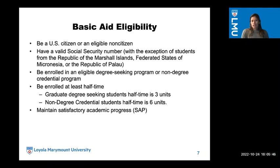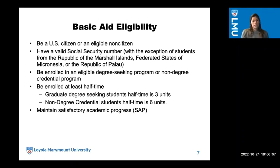Basic aid eligibility: be a U.S. citizen or an eligible non-citizen; have a valid social security number, with exceptions for students from the Republic of Marshall Islands, Federated States of Micronesia, or the Republic of Palau. You have to be enrolled in an eligible degree-seeking or non-degree credential program and be enrolled at least half-time. For graduate degree-seeking students, half-time is three units; for non-degree credential students, half-time is six units. You must maintain satisfactory academic progress, which we call SAP.